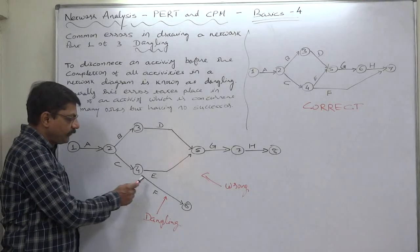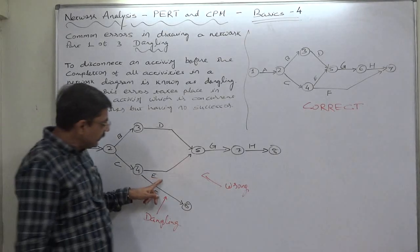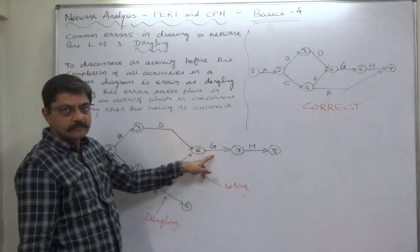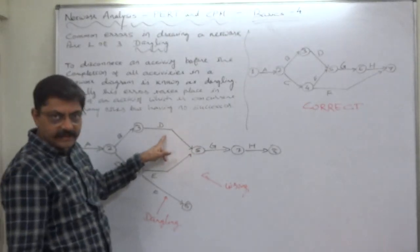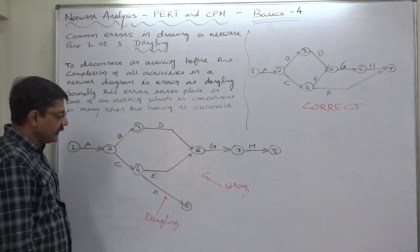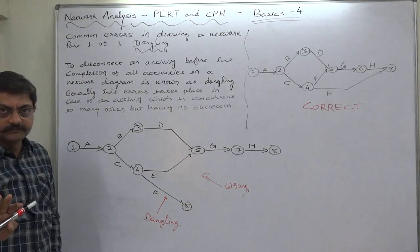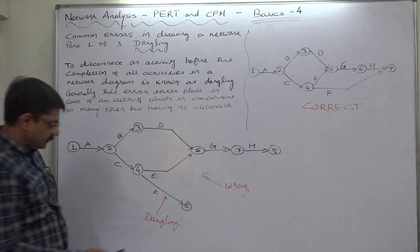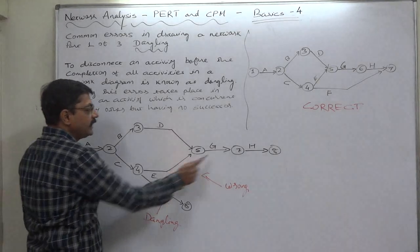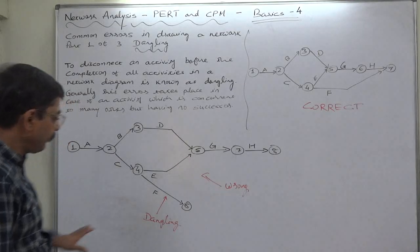...the common predecessor of activity E as well as F. Activity E is predecessor of G together with D. But the interesting thing is, F has no successor. That means we can say that F is an activity concurrent to E, G, and H. But the person who prepared this network diagram has forgotten or ignored that F can be treated as a concurrent activity for E...